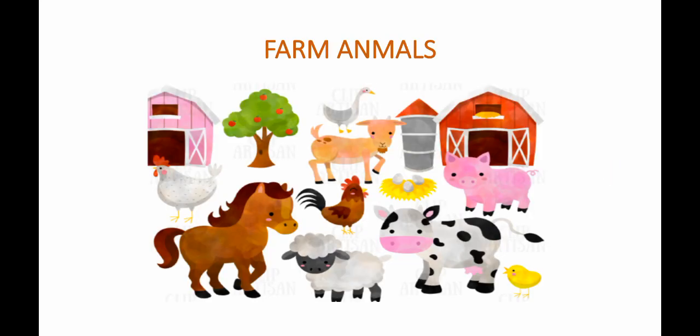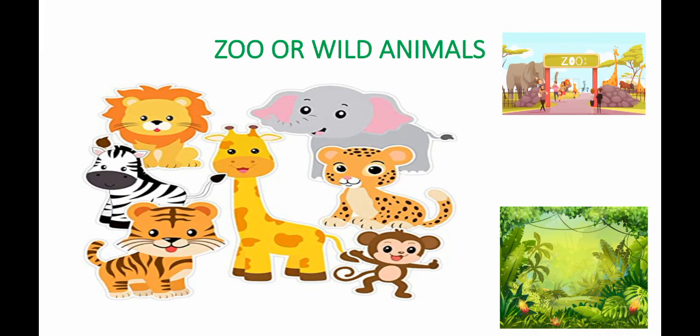Farm animals live in a barn; they need to be outside on a farm. Some examples are horse, sheep, cow, chicken, pig, rooster, goat, duck, and hen. Zoo animals, or wild animals — some examples are lion, elephant,